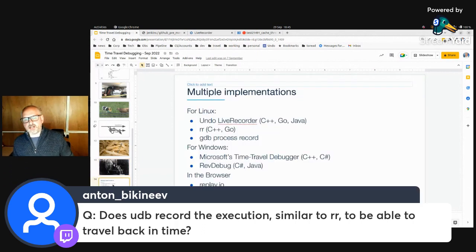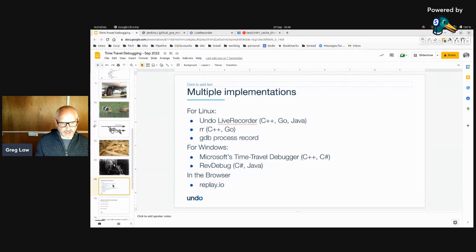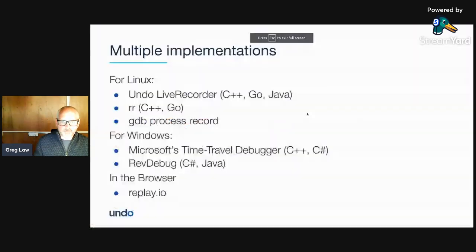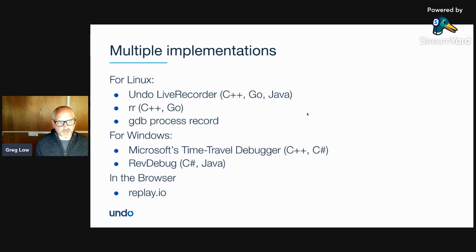For different programming languages and platforms, there are various implementations of time travel debugging today. I would say it's an idea whose time has come. RR — which stands for record and replay — for debugging C++ or Go code on Linux is open source, it's in most distros, it's a good piece of tech, it's fast, and works very well. There are areas where it can't work: if your program has shared memory shared with the kernel, asynchronous IO, or shared with a device or another process, it's not able to record that. It can't work on multi-tenant cloud machines because it's reliant on performance counters.